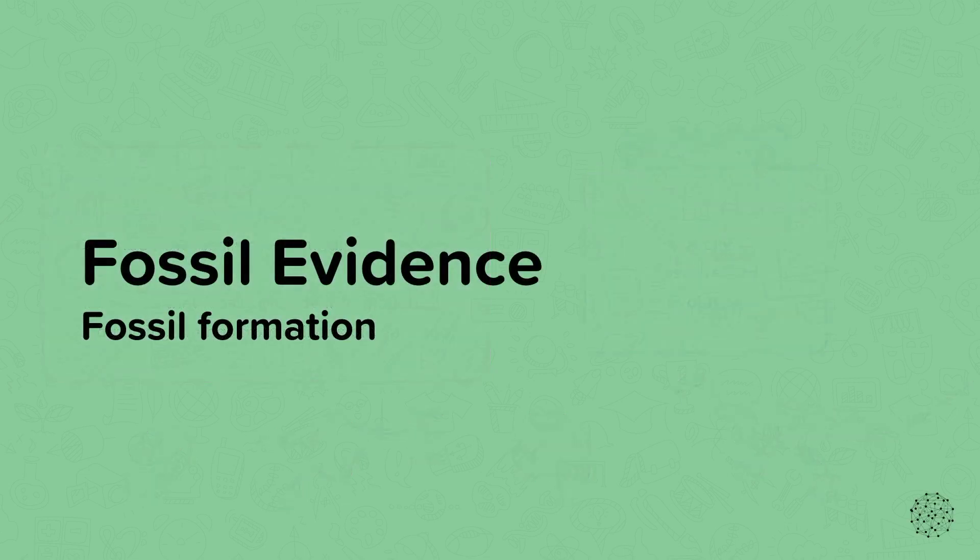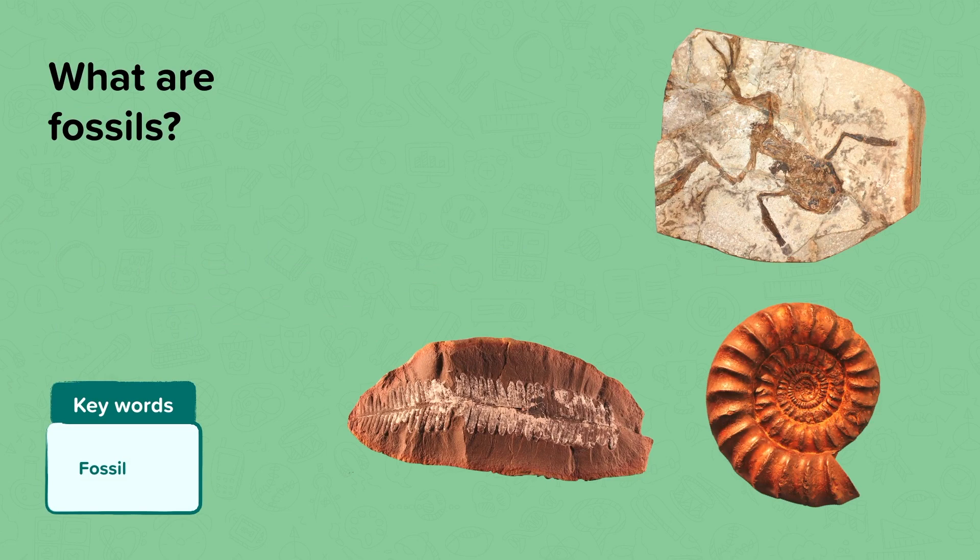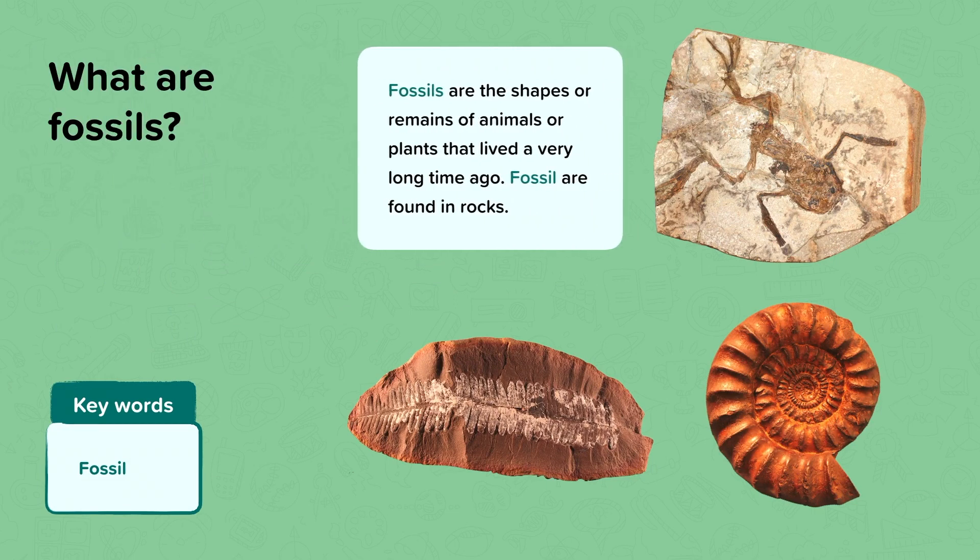Fossil formation. Can you remember what a fossil is? Here are some examples. Fossils are the shapes or remains of animals or plants that lived a very long time ago. These shapes or remains are found in rock and are dug up thousands to millions of years after they've formed.